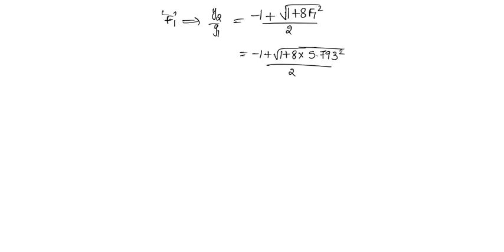Knowing F1, we can find y2 by y1, which will be equal to minus 1 plus under root of 1 plus 8 F1 square by 2, which is equal to minus 1 plus under root of 1 plus 8 times 5.793 square by 2, which will be equal to 6.94.